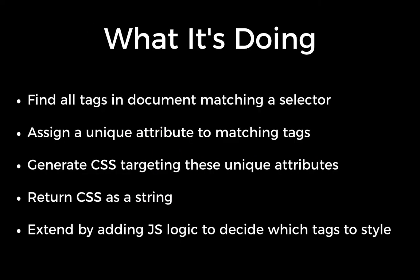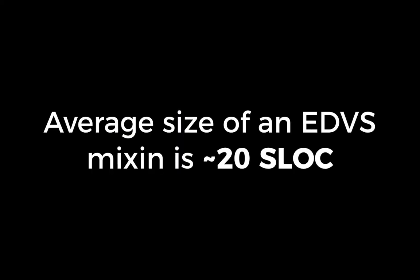What is it doing? It's finding all tags in the document matching a selector, assigning a unique attribute to matching tags, generating CSS targeting those unique attributes, and returning CSS as a string. You can extend it by adding any JS logic needed to decide which tags to style. The average size of an EDVS mixin is around 20 lines of code. These helper functions are tiny, but the things they add to CSS are huge.